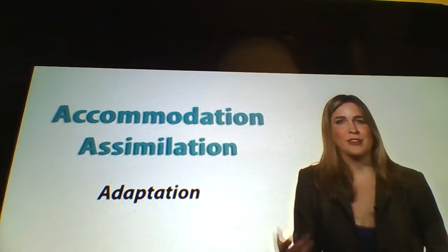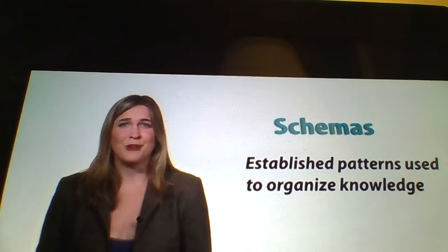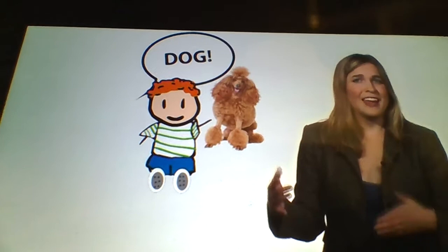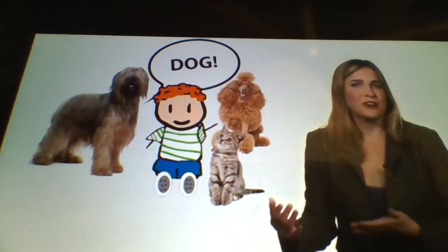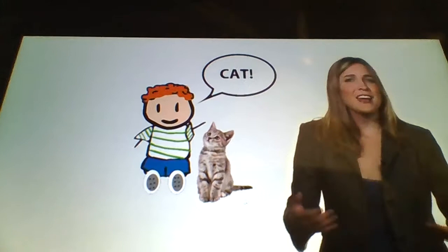Both assimilation and accommodation are related to the idea of schemas. Schemas are simply established patterns used to organize knowledge — they underlie how we think in a lot of ways. For example, stereotyping involves accessing a schema about how one type of person usually acts and using it to predict their behavior. Assimilation and accommodation are the ways that children incorporate new information into their schemas. Jack filed 'poodle' under the existing heading of 'dog,' but when he encountered a cat, he learned his schema of dog shouldn't include all four-legged furry animals, so he adjusted the schema to exclude cats.